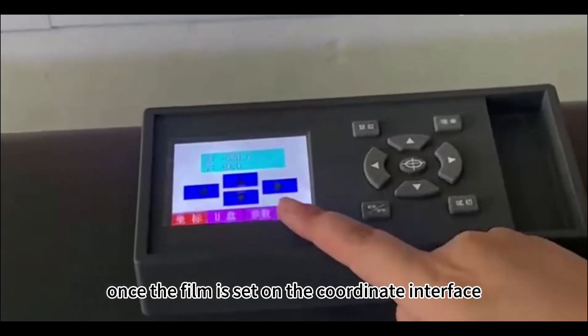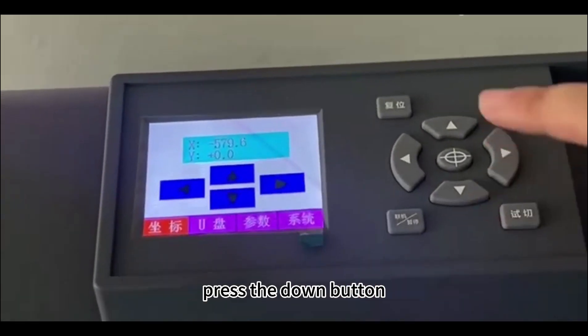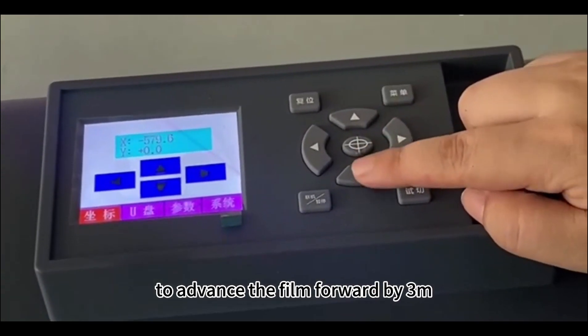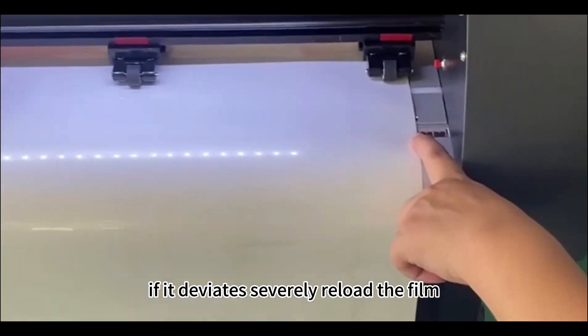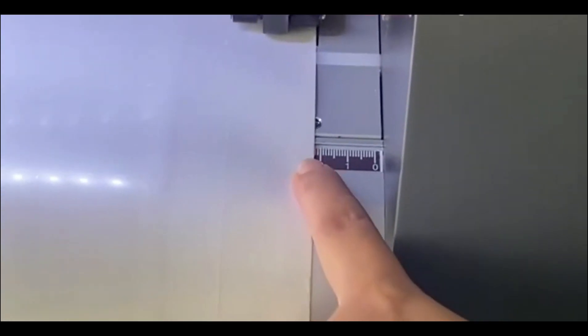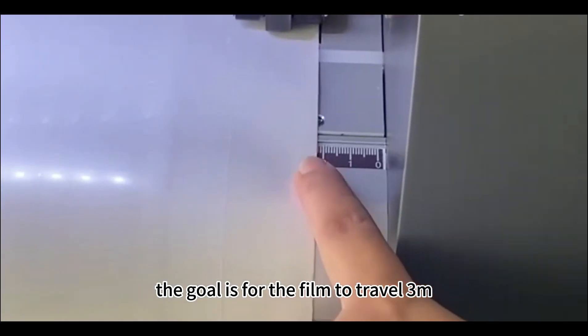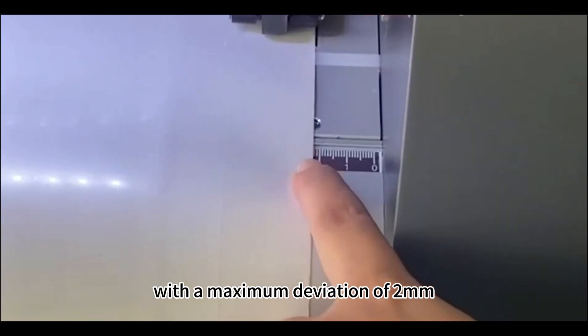Turn on the machine once the film is set. On the coordinate interface, press the down button to advance the film forward by 3 meters. Ensure the film doesn't drift left or right. If it deviates severely, reload the film. The goal is for the film to travel 3 meters with a maximum deviation of 2 mm.